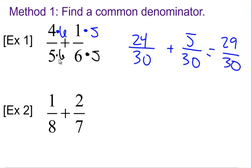What we did is multiply by the opposite denominator because we knew it would give us a common denominator. It may not be the least common denominator, but at least it's a common denominator.